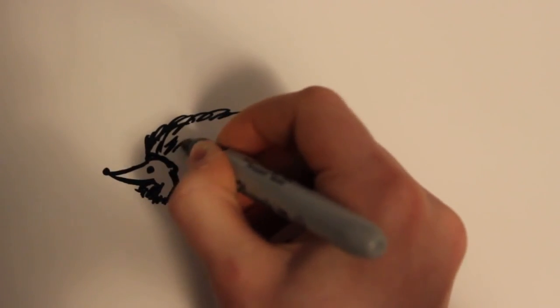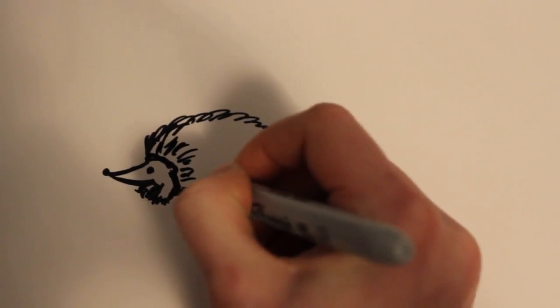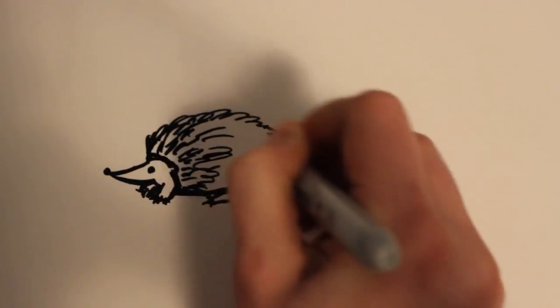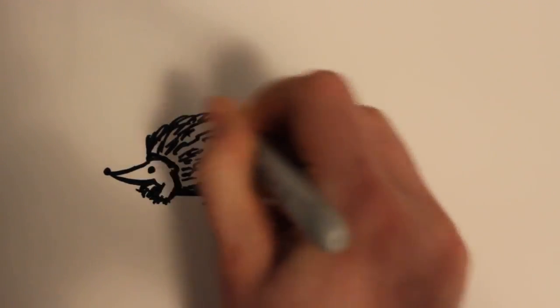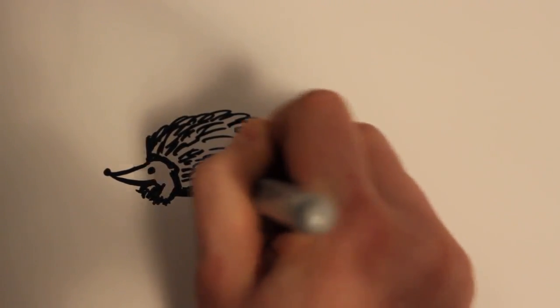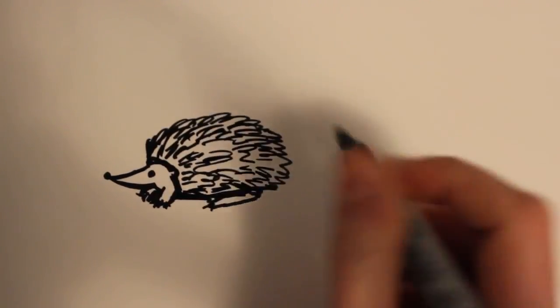And then on the inside then I can just go ahead and draw some lines following kind of the curve of the body. Which it kind of goes like curved this way. As you can see. And you can start from the out and work in or either way.